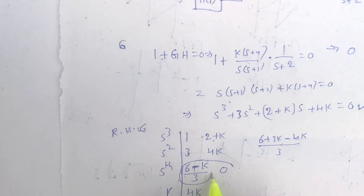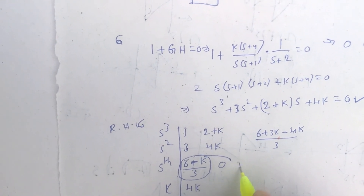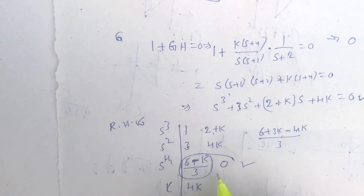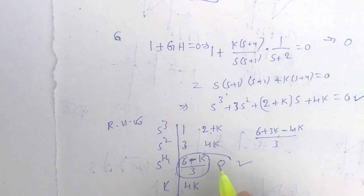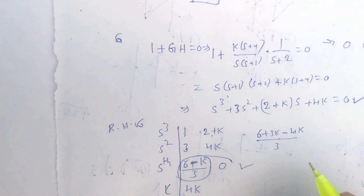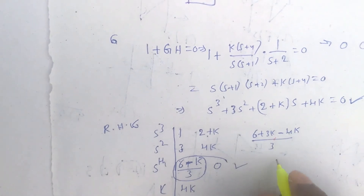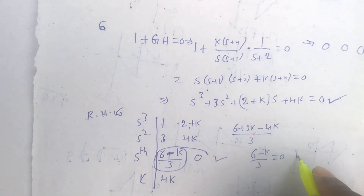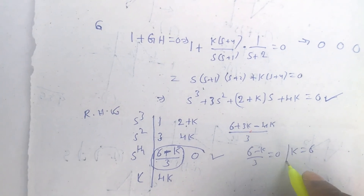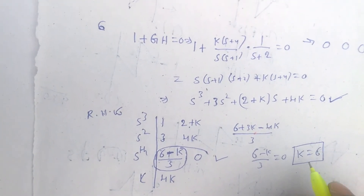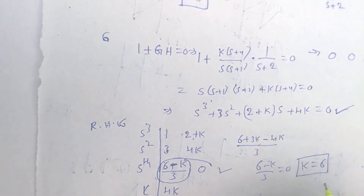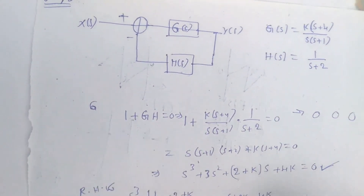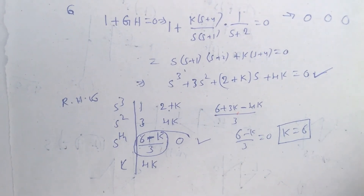For marginal stability, the Routh-Hurwitz criteria requires a row with all elements equal to zero. Setting the s¹ row element to zero: (6 − k) / 3 = 0, which gives k = 6. At this value, the closed loop system becomes marginally stable. Thank you friends, hope you understood the solution.